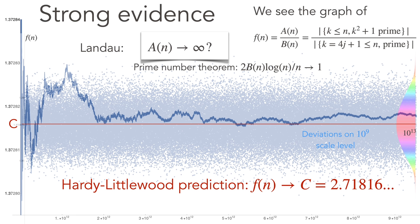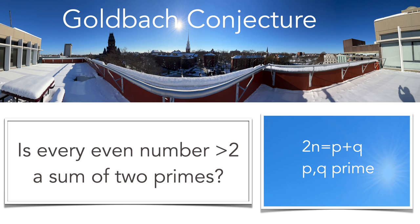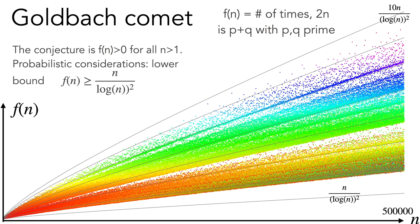The Goldbach conjecture asks whether every even number larger than two is a sum of two primes. It's a famous problem. Here we see the Goldbach comet, the graph of the function which tells in how many ways an even number can be written as a sum of two primes. Heuristic considerations give a lower bound like n over log n square assuming that the primes would be completely random.